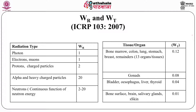ICRP Report 103 (2007) assigned radiation weighing factors for different radiation types: photons (X-rays and gamma rays) have a WR of 1, electrons also 1, protons and charged particles 2, alpha and heavy charged particles up to 20, and neutrons range from 2 to 20 depending on energy. In simple terms, the same absorbed dose of alpha rays versus X-rays is radiobiologically very different — alpha rays with WR of 20 are 20 times more biologically effective than X-rays.